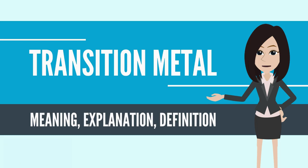Many scientists describe a transition metal as any element in the D block of the periodic table, which includes groups 3 to 12. In actual practice, the F block lanthanide and actinide series are also considered transition metals and are called inner transition metals.